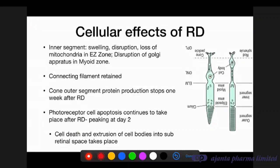The inner segment of the photoreceptor — containing the ellipsoid zone with mitochondria and the myoid zone with Golgi bodies — shows the maximum effect, with swelling, disruption, and loss of mitochondria and Golgi bodies. The connecting cilium linking outer to inner segment is retained well. Cone outer segment protein production stops one week after detachment, photoreceptor cells undergo apoptosis when detachment persists, and cell death with extrusion of cell bodies into the subretinal space then occurs.